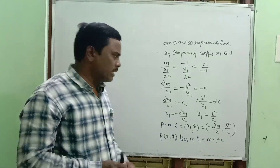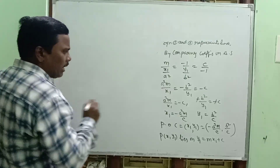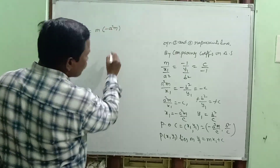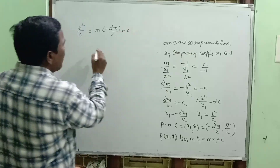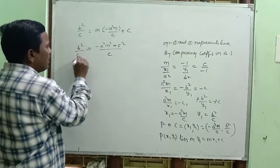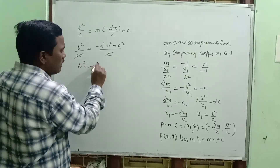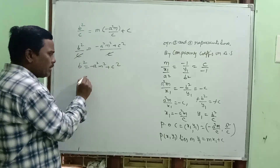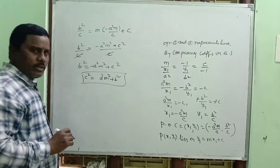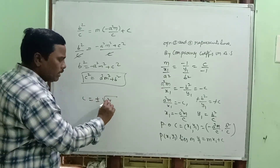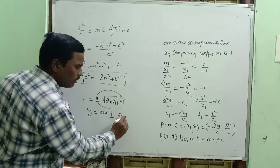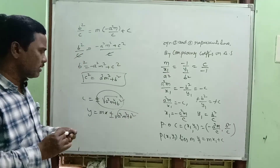Substituting x1 equal to minus a square m by c and y1 equal to b square by c into y1 equal to mx1 plus c: b square by c equal to m times (minus a square m by c) plus c. This gives b square equal to minus a square m square plus c square, so rearranging: c square equal to a square m square plus b square. This is the slope form of the tangent — a very important formula.